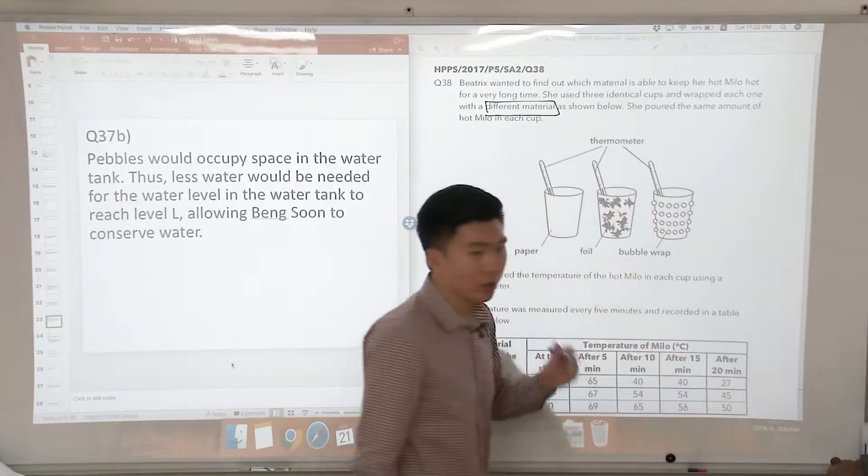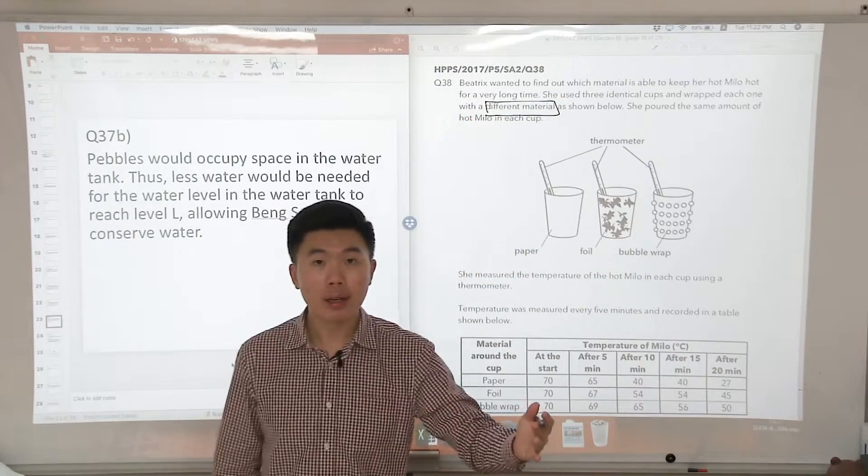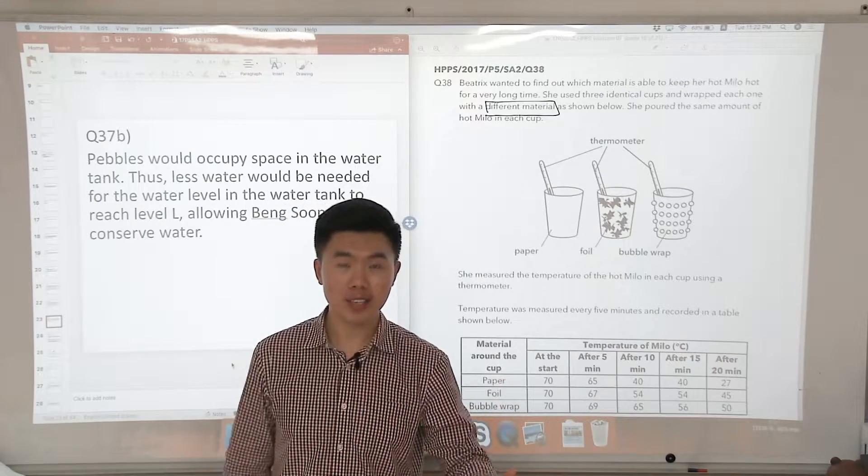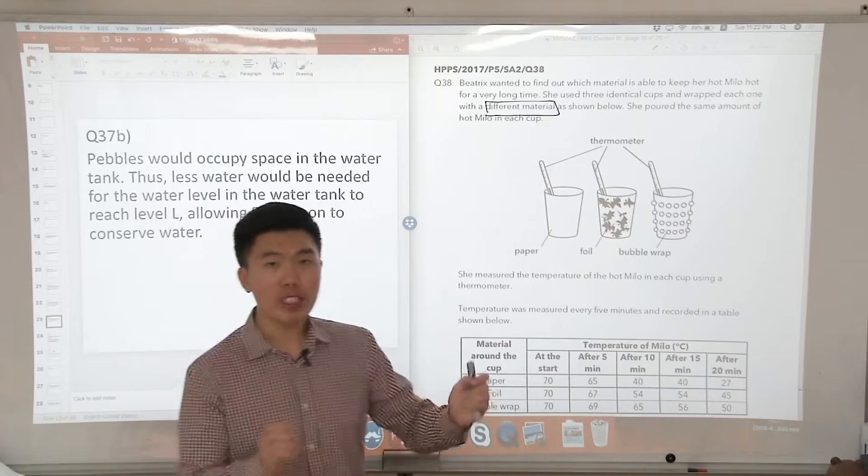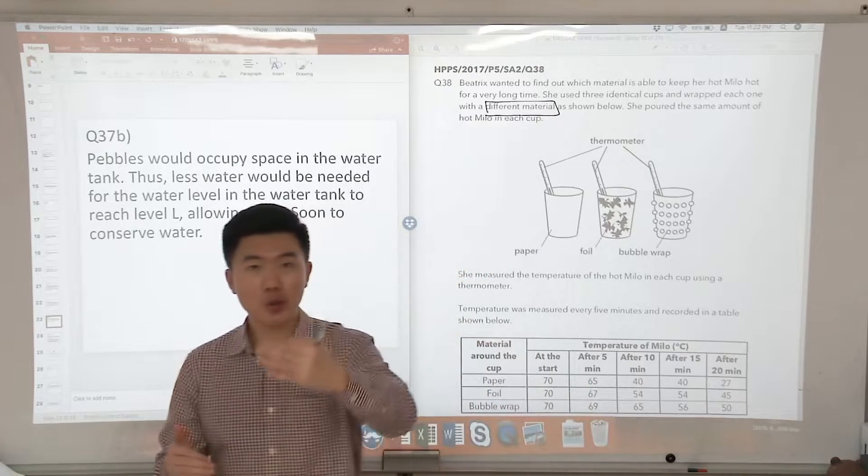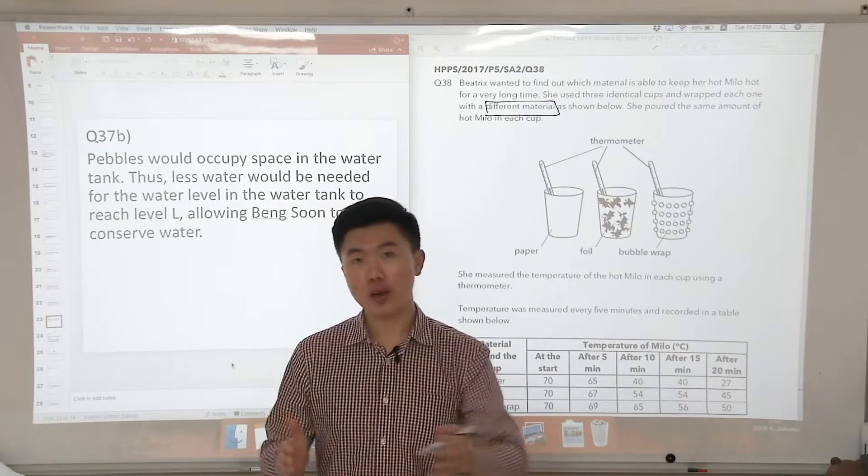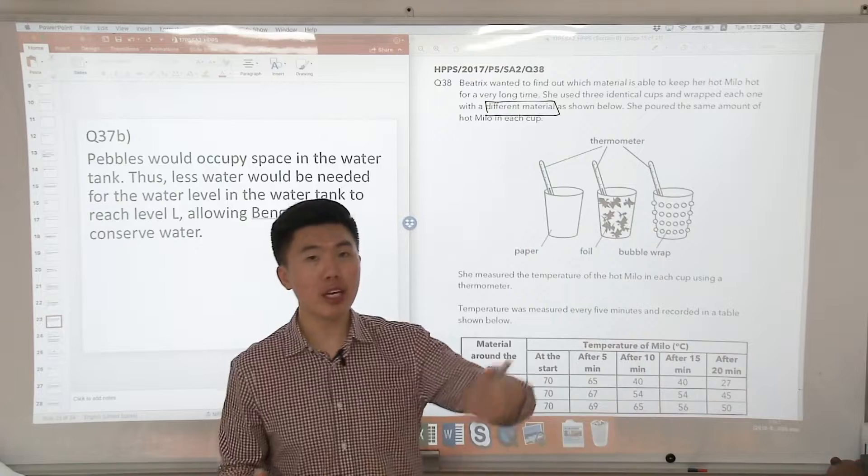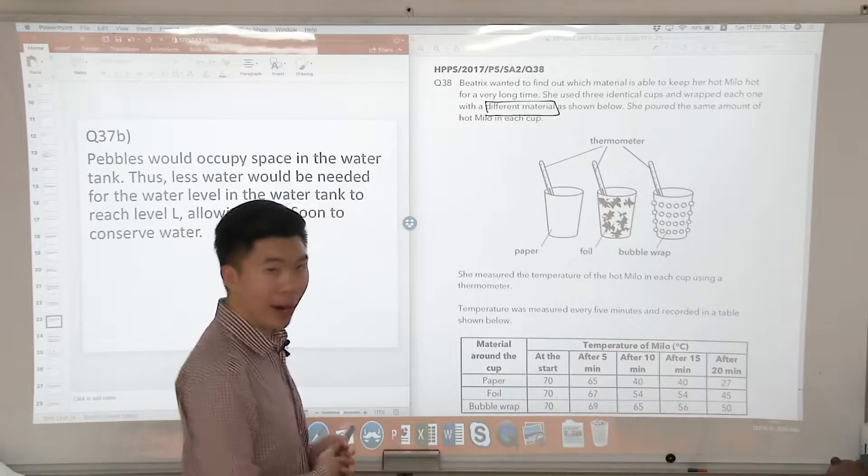What did we learn about different materials and heat? We learned that different materials have different heat conductivities. So a material which is a better conductor of heat would allow heat to pass through it faster as compared to a poorer conductor of heat where it would allow heat to pass through it slower.